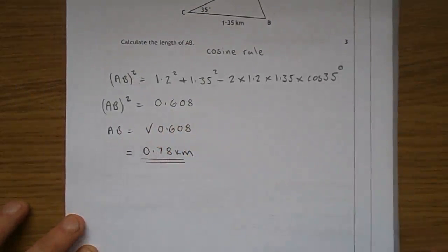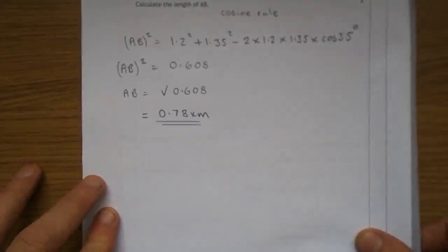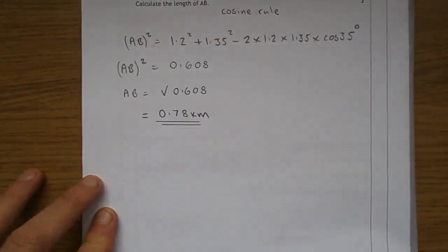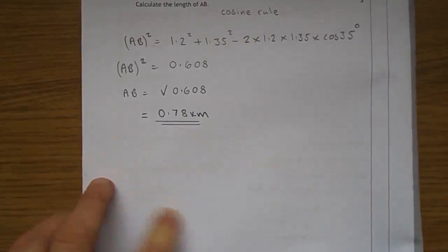To get b, you take the square root, and you get 0.78. I'm pretty sure I rounded that off. And there we go, 0.78. Let's move on to question 4.